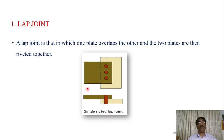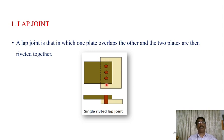In the top view, you can see both plates overlapping with each other, and this is one row of rivets consisting of three rivets. It is called a single riveted lap joint because it consists of only one row of rivets as shown in the figure.